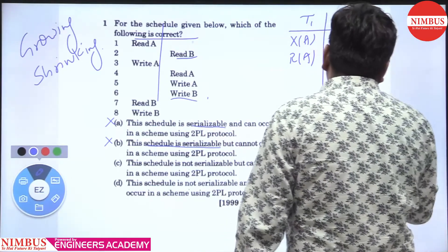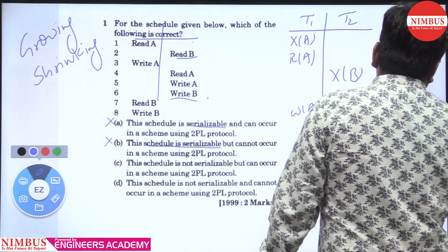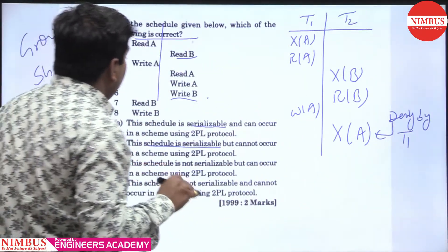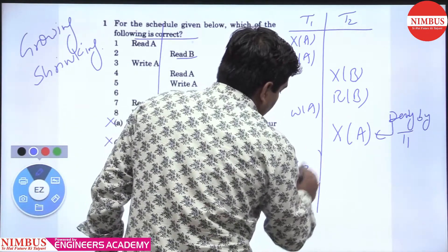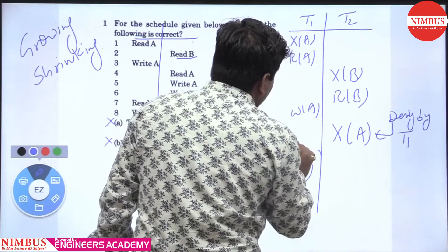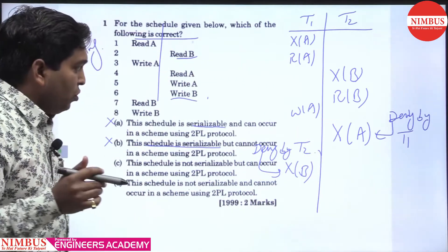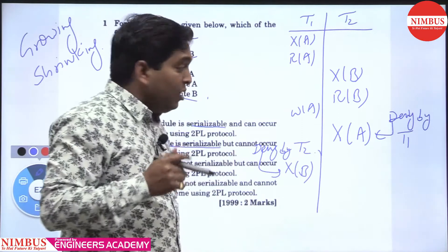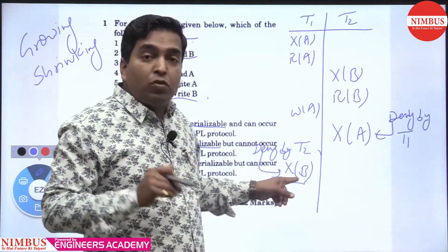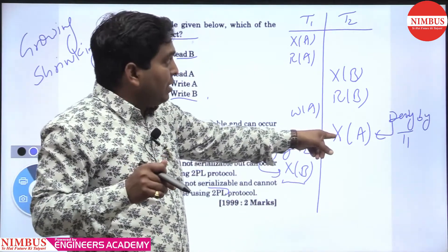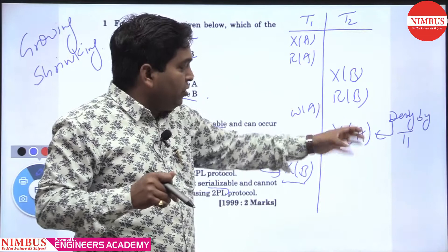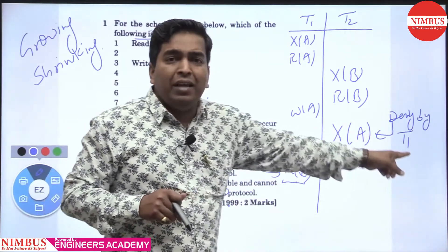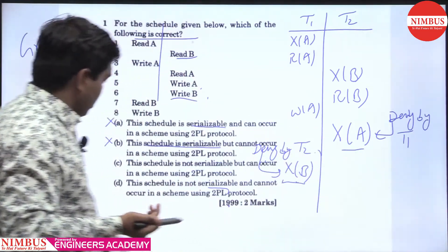The schedule is a time-ordered sequence. When T2 wants the exclusive lock on A, it is denied because the lock on A is already taken by T1. T2 wants to complete its growing phase and acquire the lock on A, but it is taken by T1, so it is denied. Therefore, 2PL cannot occur here.